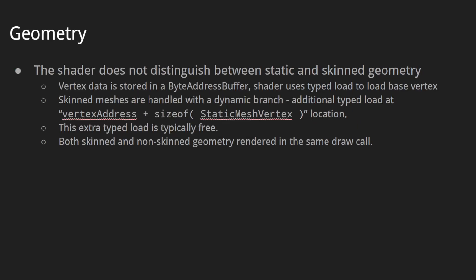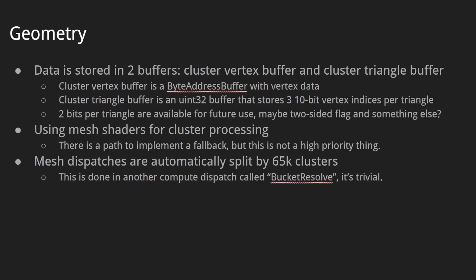Interestingly, our shader does not distinguish between static and skinned geometry. We store the vertex data in a byte address buffer, and the shader uses a typed load to load the base vertex. Skinned meshes are handled with a dynamic branch — one additional typed load at vertex address plus the size of the static mesh vertex location. This extra typed load is typically free, and both skinned and non-skinned geometry is rendered in the same draw call. We store the vertex data in two buffers called cluster vertex buffer and cluster triangle buffer. The cluster vertex buffer is just a byte address buffer with the vertex data discussed earlier.